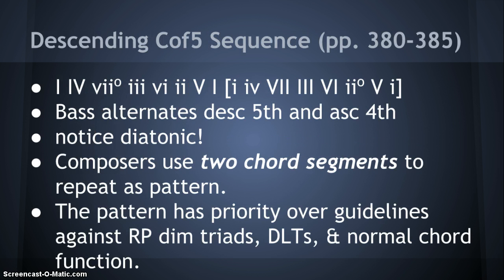The information on descending circle of fifths begins on page 380. The chord progression is just descending by fifth by Roman numerals: I, IV, VII, III, VI, II, V, I — which sounds like this in C major. You can also see it in minor, which is what we went over today. Notice that the bass alternates descending fifth and ascending fourth. Also notice that this is a diatonic circle of fifths as opposed to the chromatic circle of fifths you're used to writing out for key signatures. That alternating of fifth and fourth gives us two-chord segments to repeat as a pattern.